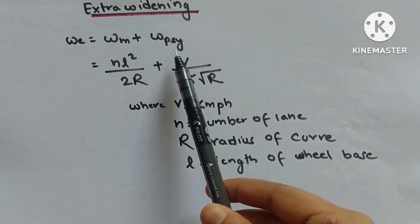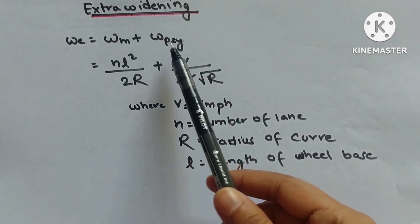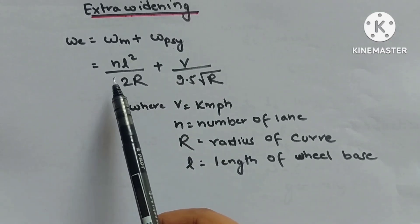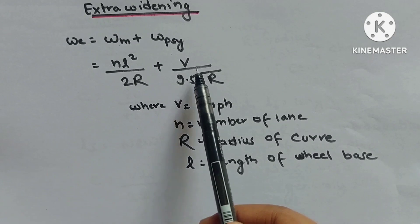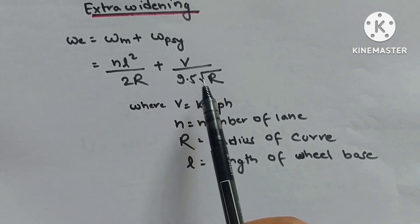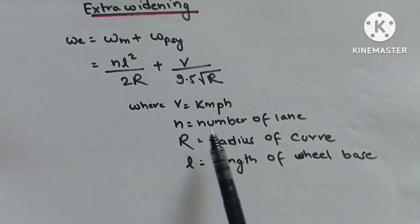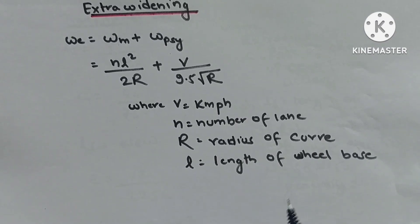Extra widening: We = Wm + Wps = nl²/(2R) + V/(9.5√R), where Wm is mechanical widening, Wps is psychological widening, n is number of lanes, l is length of wheelbase, R is radius of curve, and V is speed in km/h.